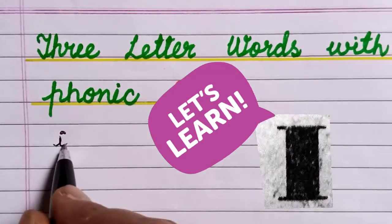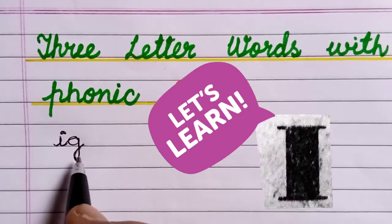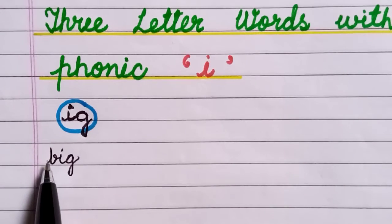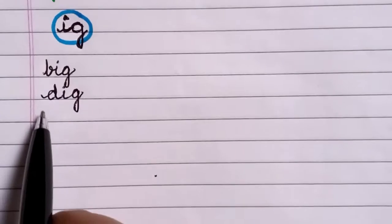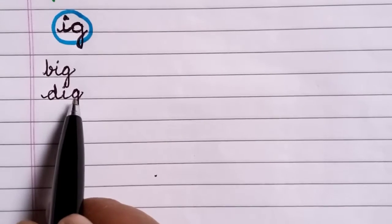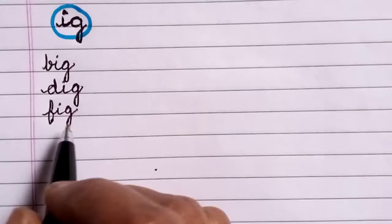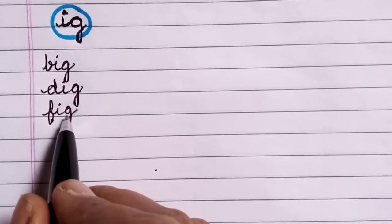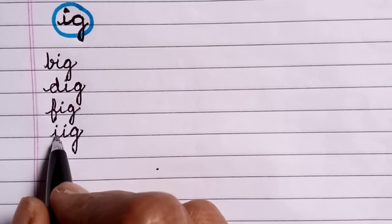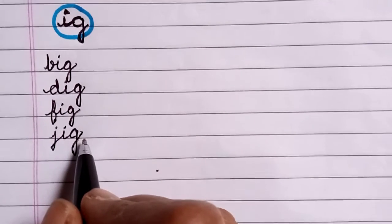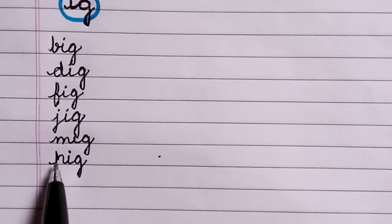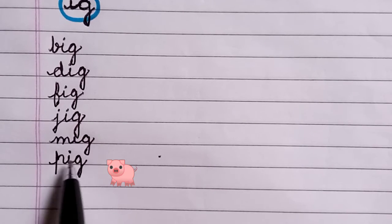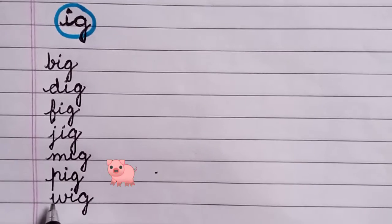This is I, G, Ig. And this will be B, I, G, Big. D, I, G, Dig. F, I, G, Fig. J, I, G, Jig. M, I, G, Mig. P, I, G, Pig. W, I, G, Wig.